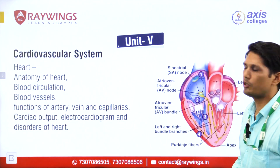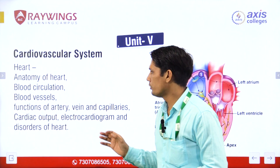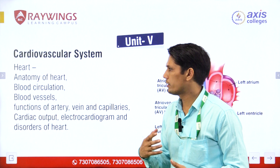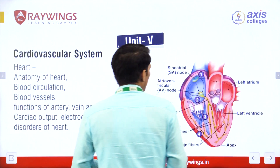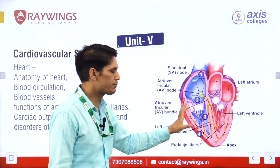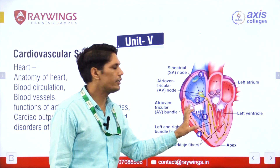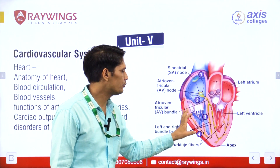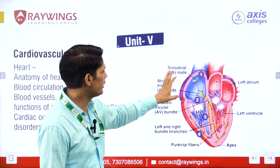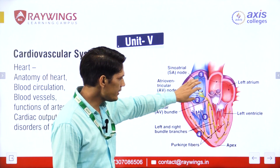Unit 5 is the cardiovascular system. Cardio means heart, vascular means blood vessels. We will learn about the heart, its layers, chambers and valves. The heart is a hollow muscular organ with three layers: epicardium, myocardium and endocardium. The myocardium makes up 90% of the heart. The inferior and superior vena cava bring blood to the right atrium.